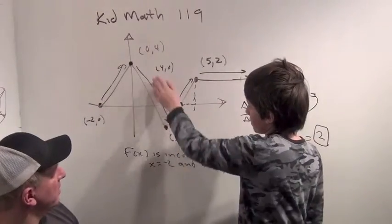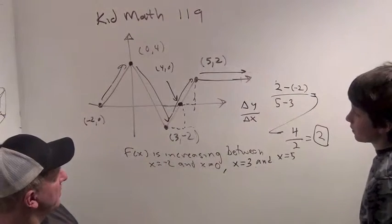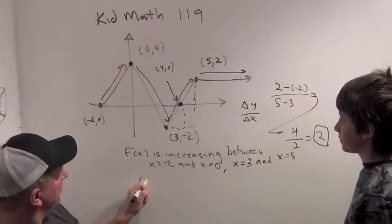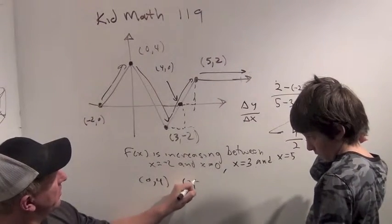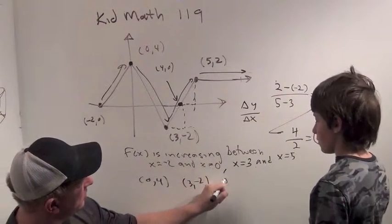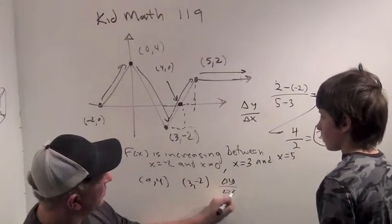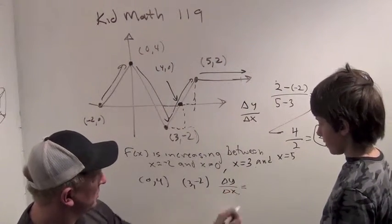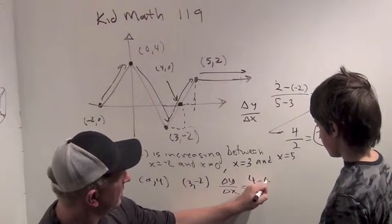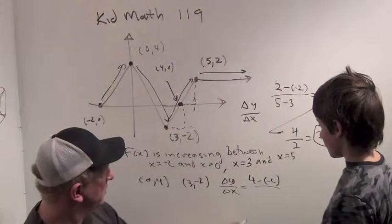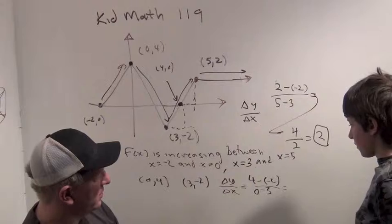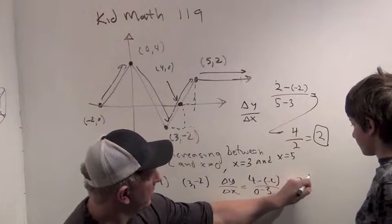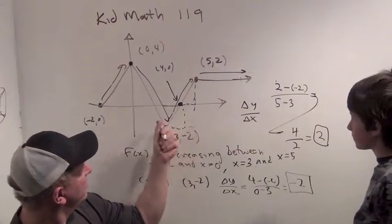How about the slope of this? Okay. So it goes from the point 0, 4 to the point 3 comma minus 2. So what's the change in y over the change in x? Well, it's 4 minus minus 2 over 0 minus 3, which is? So we get 6 over minus 3, which is minus 2. Minus 2. So the slope here is minus 2.